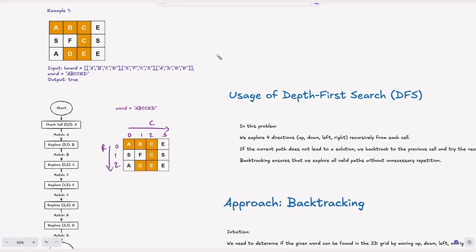Welcome back to HackCode. In this video, we will solve an essential problem for coding interviews: Word Search from LeetCode. This problem is a great way to strengthen your understanding of backtracking and depth-first search. It requires us to search for a word in a 2D grid by traversing cell-by-cell in all directions. This type of problem is asked when interviewers want to assess your analytical and logical problem-solving skills rather than testing heavy data structure concepts.